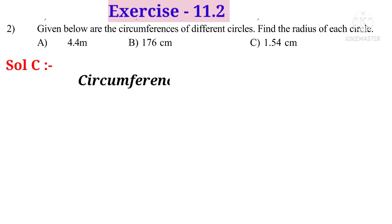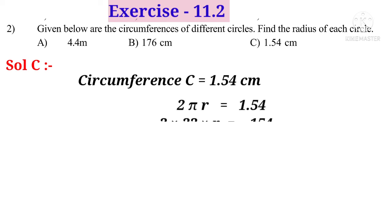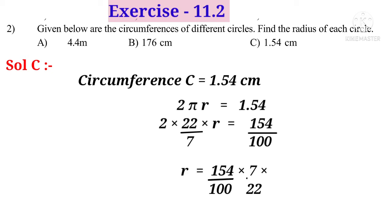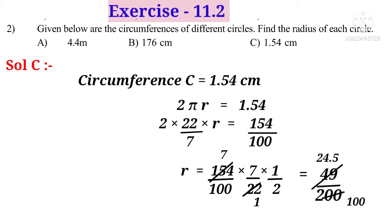Solution (c): Circumference C equals 1.54 centimetres. Since C equals 2πr, we get 2 × (22/7) × r equals 1.54, written as 154/100. Solving: r equals (154/100) × (7/22) × (1/2). On simplification, 22 cancels into 154 giving 7, so numerator becomes 7 × 7 equals 49 and denominator becomes 100 × 2 equals 200. Simplifying 49/200 gives 0.245, but further simplification by 2 gives 24.5/100, so radius r equals 0.245 centimetres.